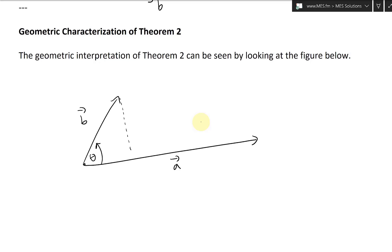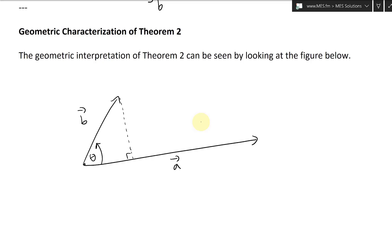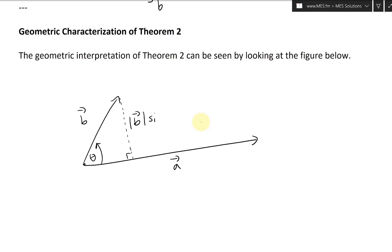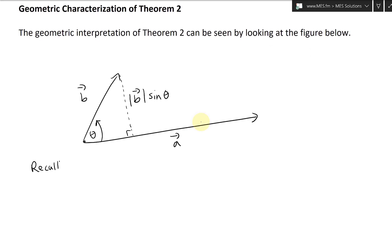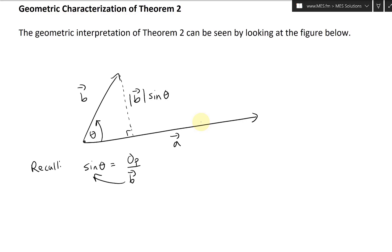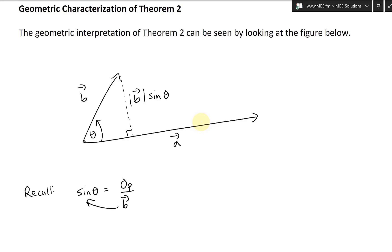The geometric interpretation: you have the length of A here. Now this other length — using the Pythagorean theorem, opposite over hypotenuse involves sine — so sine theta equals opposite over hypotenuse B. Moving it over, you get the opposite side, which is just going to be the length of B times sine theta. Recall: sine theta equals opposite over hypotenuse, in this case B. Move it over and you get B·sin(θ).